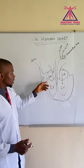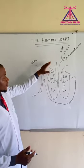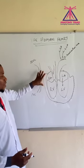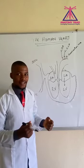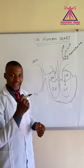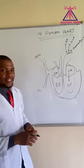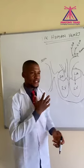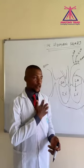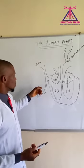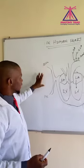Starting from there, you will find out that the heart is somehow labeled on the board, but the size of the heart is about a clenched fist. The heart is located on the left side of the chest, that is the thorax. Having known that, we are going to look at the heart from this side.